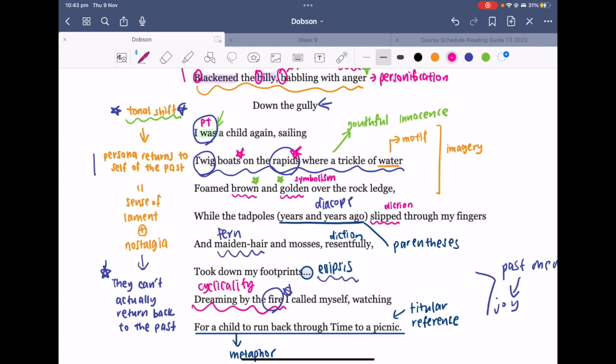You could also make note of the diacope in the parentheses "years and years ago" that works together with the polysyndeton in "and maiden hair and mosses." This emphasizes how much time has passed, so it essentially creates this image of not necessarily neglect but more so this idea of the accumulation of time where the maiden hair fern grows and mosses build up. For those of you who didn't know, maiden hair is a type of fern.